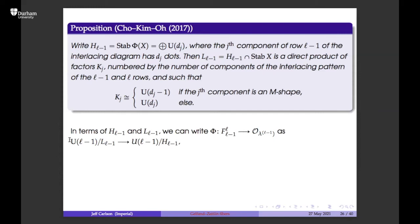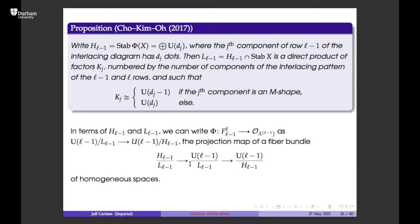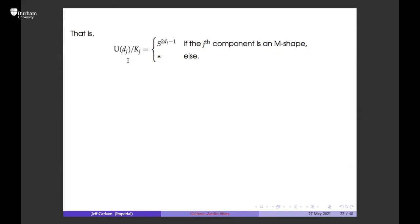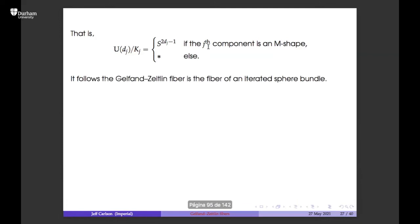In terms of these groups, we can write the projection as U(l-1) mod the small group down to U(l-1) mod the bigger group — a quotient map. This is the projection of a fiber bundle where total space, base, and fiber are all homogeneous. The theorem makes clear that the fiber is a product of spheres, where each quotient U(d_j) / U(d_j - 1) is a sphere, corresponding to M-shapes, and just a point otherwise.